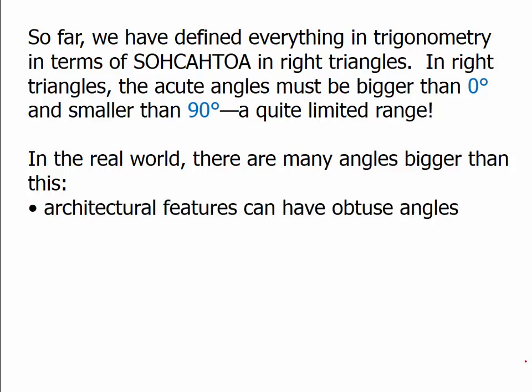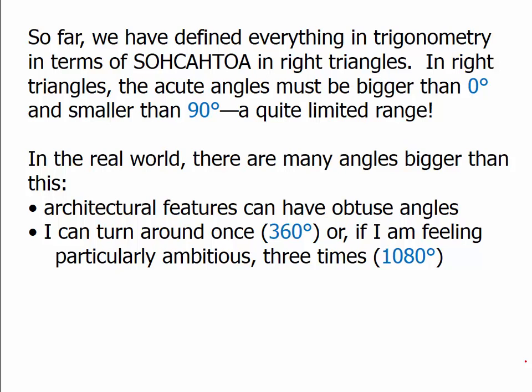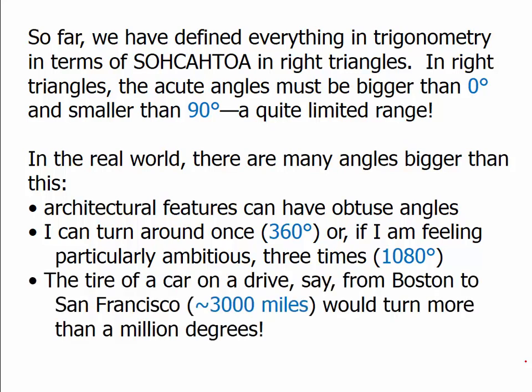There are certainly architectural features that can have obtuse angles, and we can see obtuse angles in the real world. We could have an obtuse angle between three points on a map. I could turn around three times — well, that's 1,080 degrees of angle. Think about the tire of a car: every time it turns, it's another 360 degrees. If I drive from Boston to San Francisco, that tire goes through probably millions of degrees. That's why we need a larger context than SOHCAHTOA.